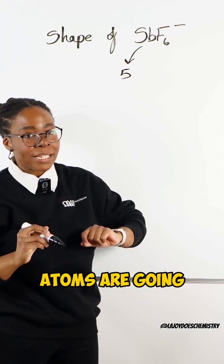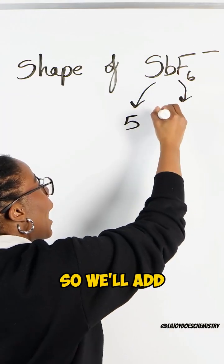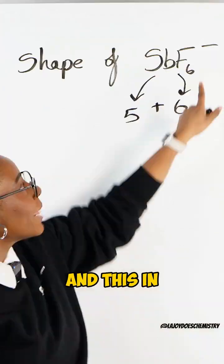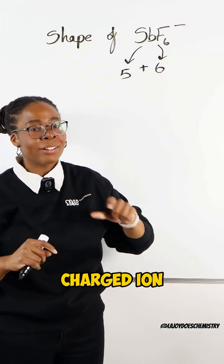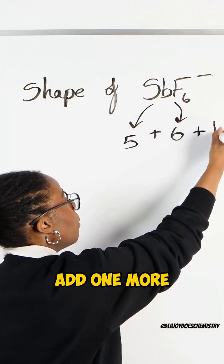Then each of these fluorine atoms are going to come in contributing one electron each, so we'll add 6 electrons. But because this is an ion, and this in particular is a negatively charged ion, that means there is an additional electron, so we're going to add one more.